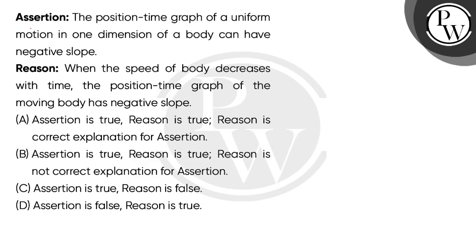Hello children, let's read the question. Present question: assertion and reason, those statements are based on. Assertion states that the position-time graph of a uniform motion in one dimension of a body can have negative slope.